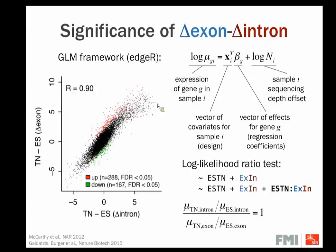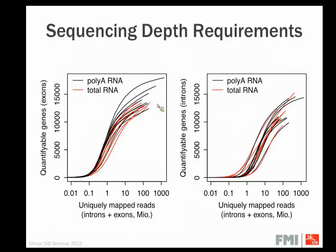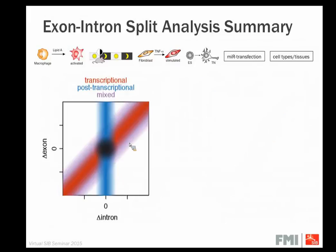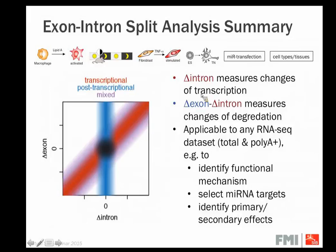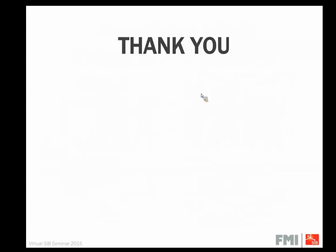You might think that in poly-A selected RNA-seq data you shouldn't find many reads mapping to introns, but in fact you still do. Plotting the number of reads versus the number of genes you can quantify, poly-A and total RNA-seq datasets are actually not that different for reasons we don't fully understand. This is essentially to encourage you that if you only have poly-A selected data, this approach may still be applicable. I hope I could convince you that it's worth looking at both exons and introns, especially if you're interested in transcriptional or post-transcriptional regulation. Thank you for your attention.